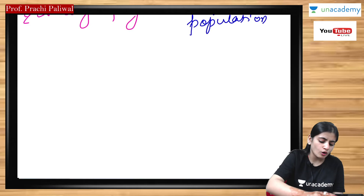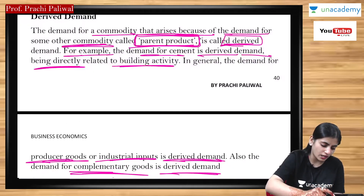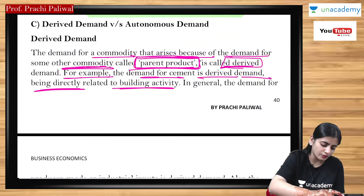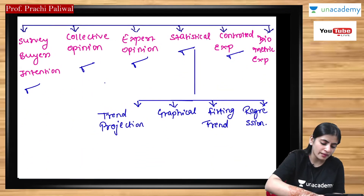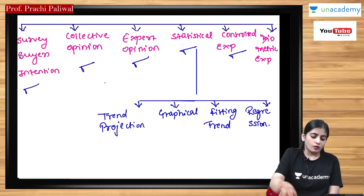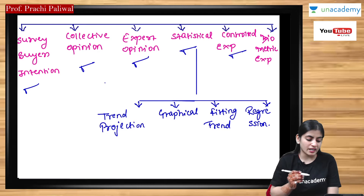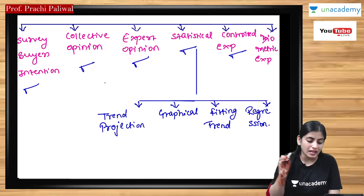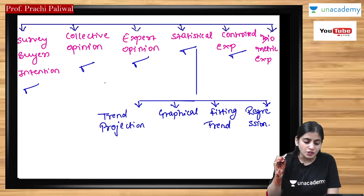After studying all these things, we started with methods of demand forecasting: survey of buyer intention method, collective opinion method, expert opinion method, statistical method, controlled experiment method, and barometric method.